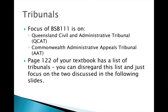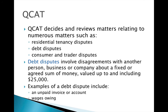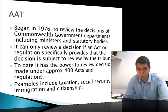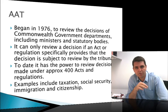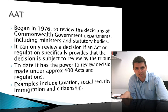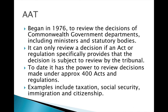You should be aware of the Queensland Civil and Administrative Tribunal (QCAT) and the Commonwealth Administrative Appeals Tribunal (AAT). QCAT reviews matters relating to residential tenancy, debt disputes, consumer and trader disputes, and disagreements for debts up to and including $25,000 — such as an unpaid invoice or owed wages. It's really trying to provide a cheap, quick method for dealing with relatively smaller amounts of money. The Administrative Appeals Tribunal is a very important tribunal that began in 1976, and its aim is to review decisions of Commonwealth Government departments, including those of ministers.